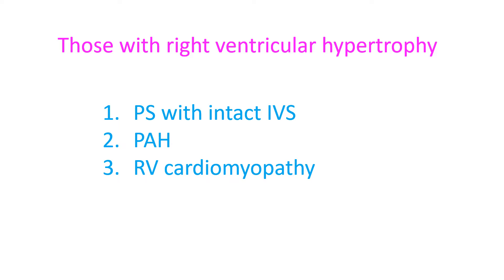In cases of right ventricular hypertrophy, such as pulmonary stenosis with an intact ventricular septum, right ventricular pressures can become suprasystemic in severe pulmonary stenosis, producing severe right ventricular hypertrophy and diastolic dysfunction. This leads to right atrial overload and prominent A waves in JVP.